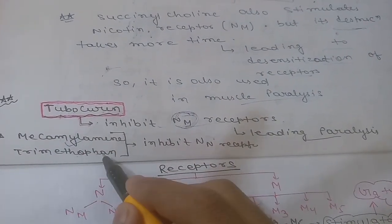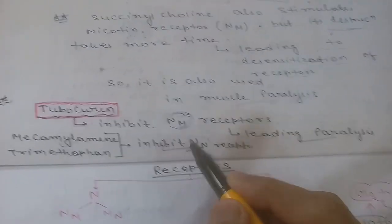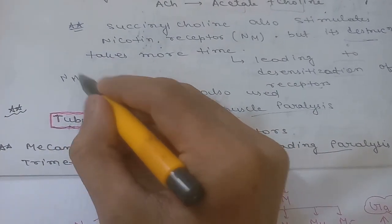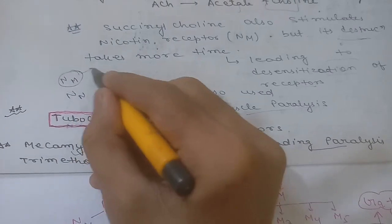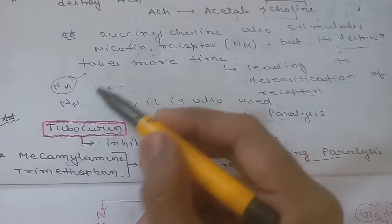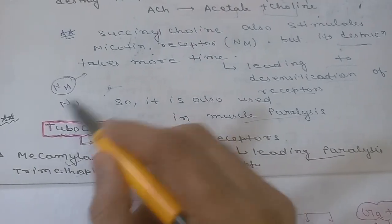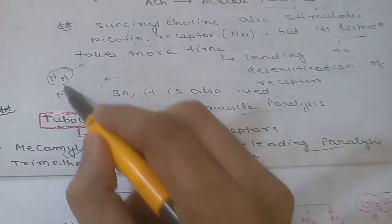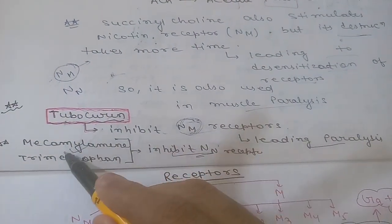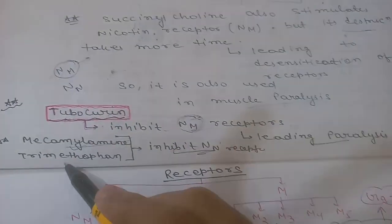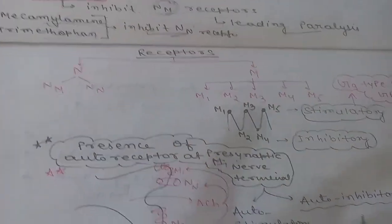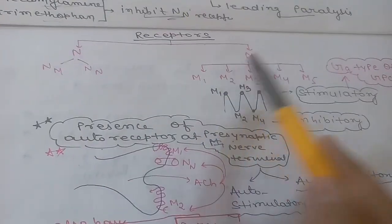Mecamylamine and trimethaphan inhibit NN receptors. So there are separate drugs for inhibiting NM receptors (present on muscle) and NN receptors (present on nerve): tubocurarine targets NM receptors, while mecamylamine and trimethaphan target NN receptors.